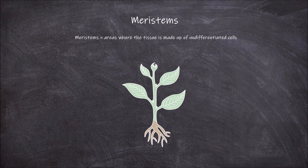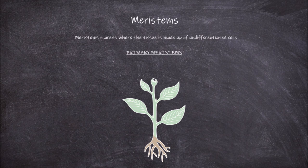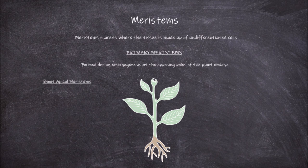There are two main groupings of meristems: primary meristems and secondary meristems. Primary meristems are meristems that are formed during embryogenesis at the opposing poles of the plant embryo. Once the plant has germinated and started growing outside of the seed, the primary meristems are responsible for providing the cells that differentiate to form the primary tissues of the plant. The primary meristems are the apical meristems, both the shoot apical meristems and the root apical meristems.